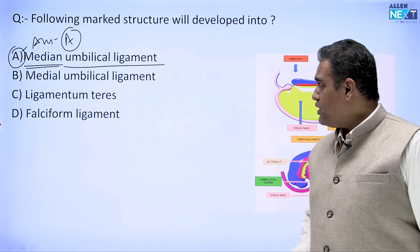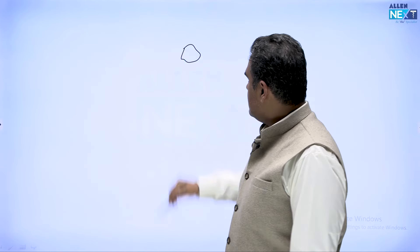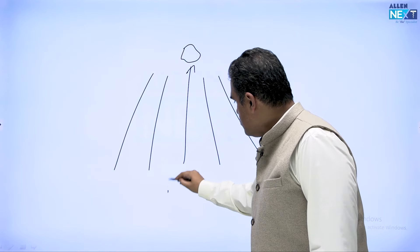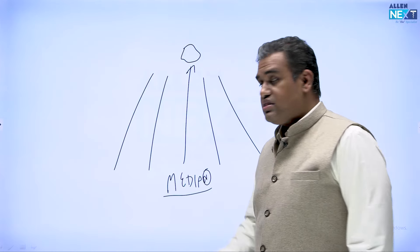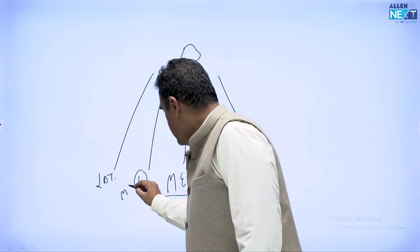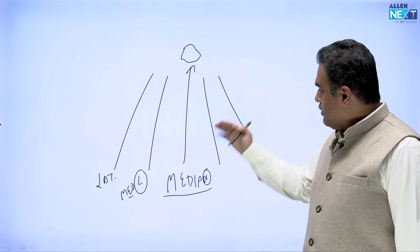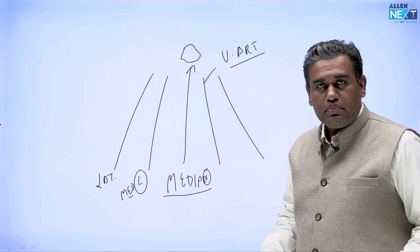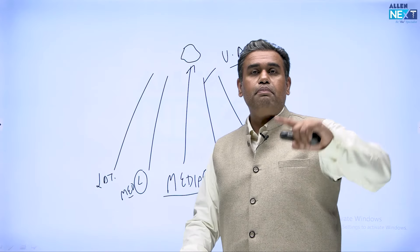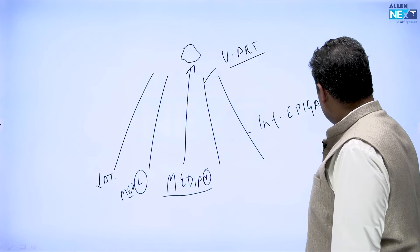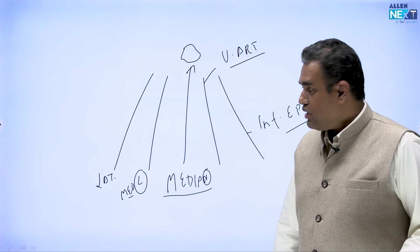Regarding the umbilical ligaments — a short but very important topic. Looking at the abdominal wall from inside at the lower part, near the umbilicus there are five umbilical ligaments: one in the middle (median), two medial ones on either side, and two lateral ones. The median umbilical ligament is what the question asks about, as it is the midline single structure. The medial umbilical ligaments are the obliterated umbilical arteries. The lateral umbilical ligaments are the peritoneal folds over the inferior epigastric artery, a branch of the external iliac artery.